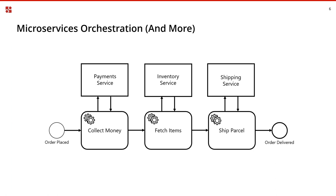We got a lot of feedback that Camunda is helpful for emerging use cases like microservices orchestration, and we wanted to make it easier to carry out those use cases — these task clients are one way of doing that. The high-level example we're looking at is an e-commerce order fulfillment process: a series of service tasks, each carried out by an external worker — each being a different microservice in a microservices orchestration case.